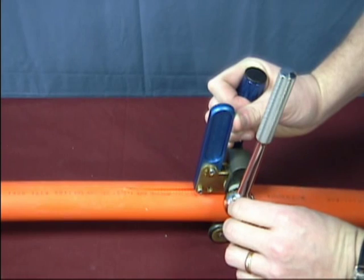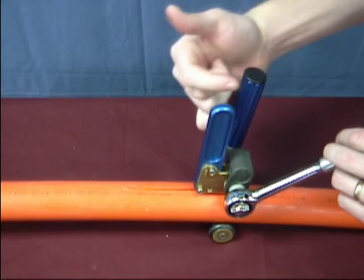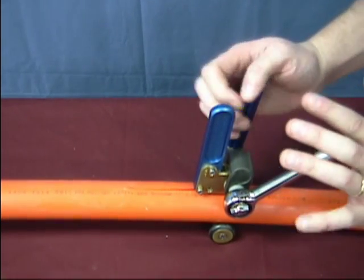When it comes time to exit the duct, simply reverse the ratchet and do the opposite motion. Push the lever bar towards yourself while pushing the ratchet away.